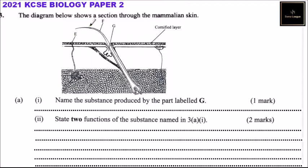Question number three. The diagram below shows a section through the mammalian skin. We have our diagram here with labels. The cornified layer is the topmost layer of the skin — the hard part. Here we have G, which is the sebaceous gland. F is here, and E is what we call the sweat pore, where sweat comes through.